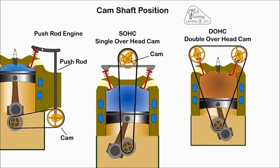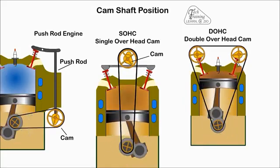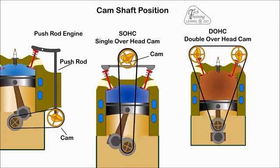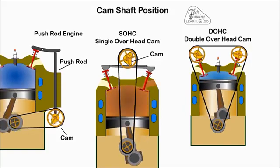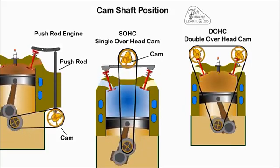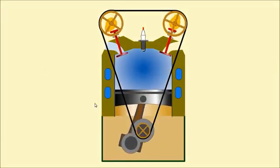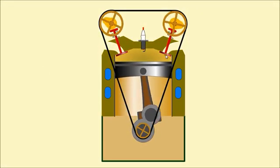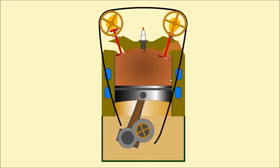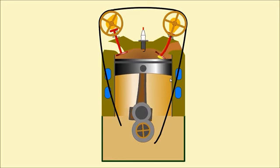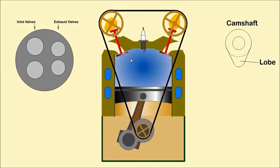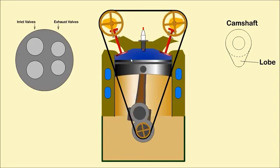With a non-interference engine, the valves do not extend into the path of the piston. If the timing belt breaks it will not result in damaged valves. With an interference engine, the valves extend into the path of the piston. If the timing belt breaks it will result in damage to the valves.